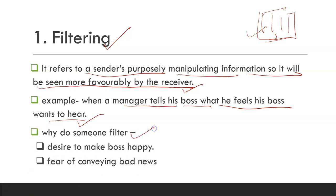Why do we do it? Anyone does this because of the desire to make the boss happy — whoever you work under, you want to see them happy, or whoever you live with, you want them to be happy. That is why we manipulate information in this way. There can be many reasons for it, but these are the two primary reasons. So filtering is all about manipulating the information by the sender.